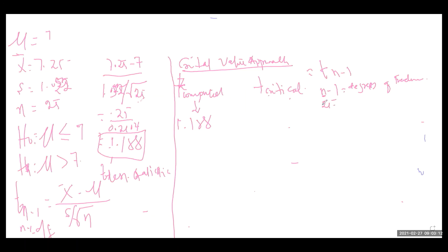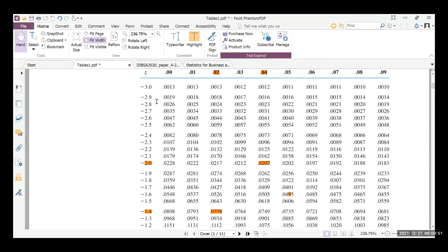The sample size is 25, so degrees of freedom is 24. Alpha is 0.05 by default. To find the t critical, we look up t with 24 degrees of freedom at alpha 0.05. Go to the t-distribution table that was shared with you. Look for the t-distribution table — it should be on your WhatsApp page.